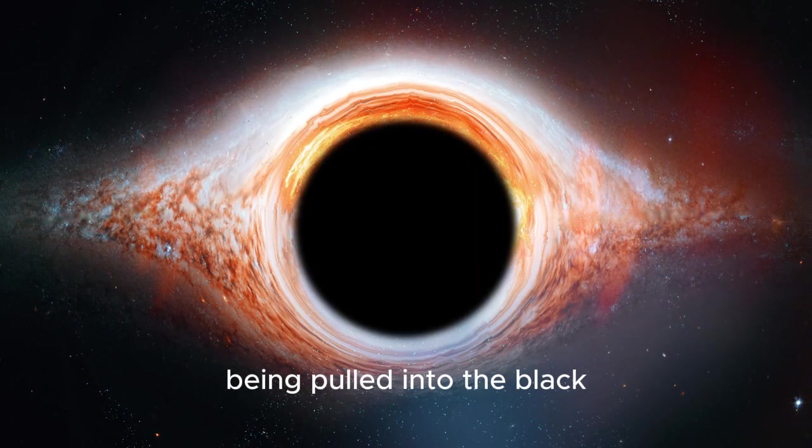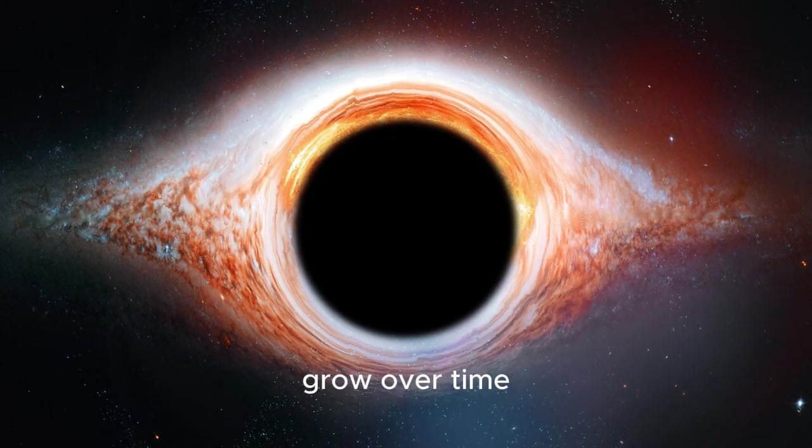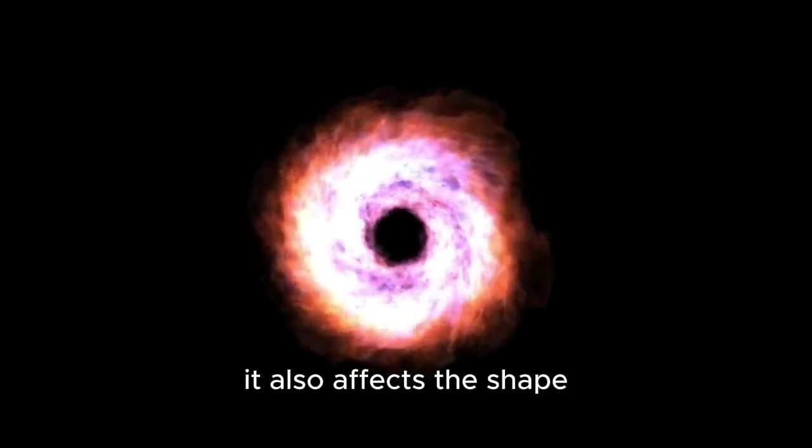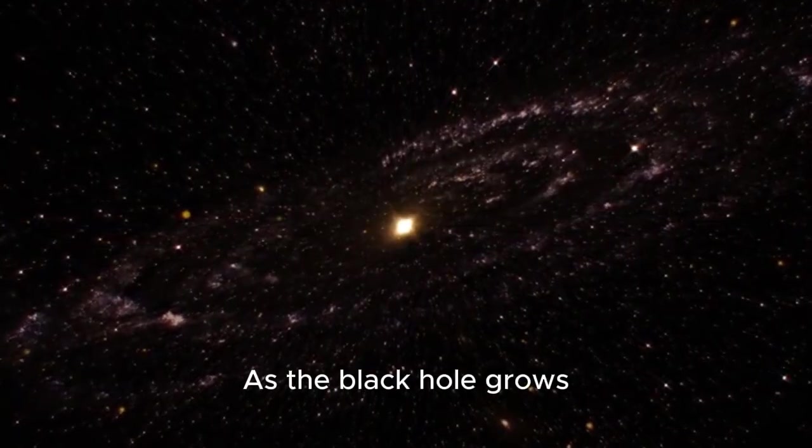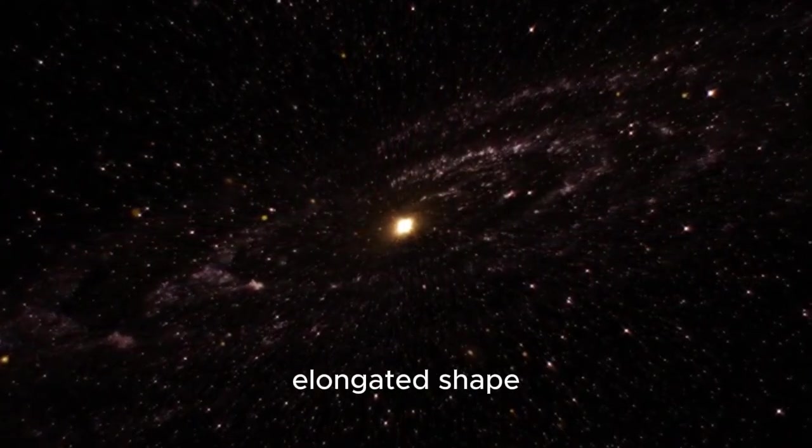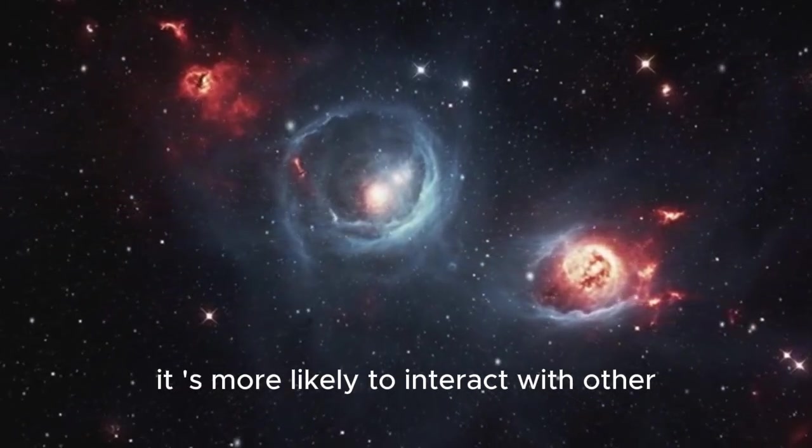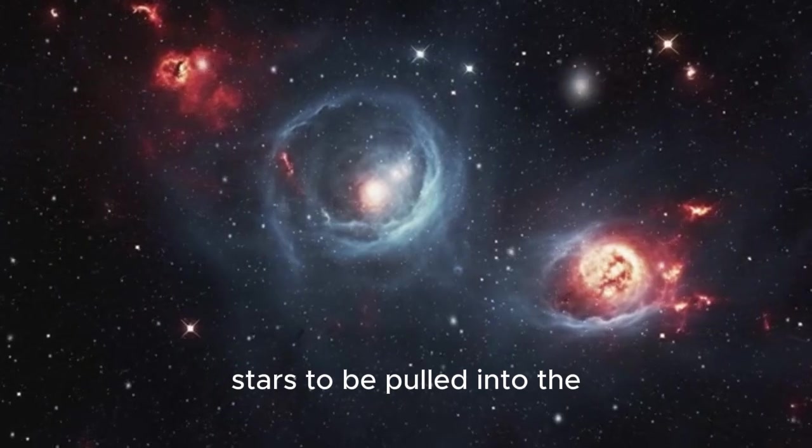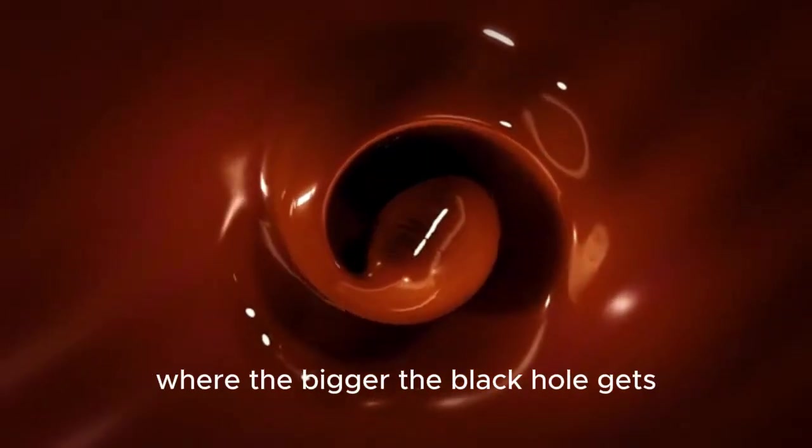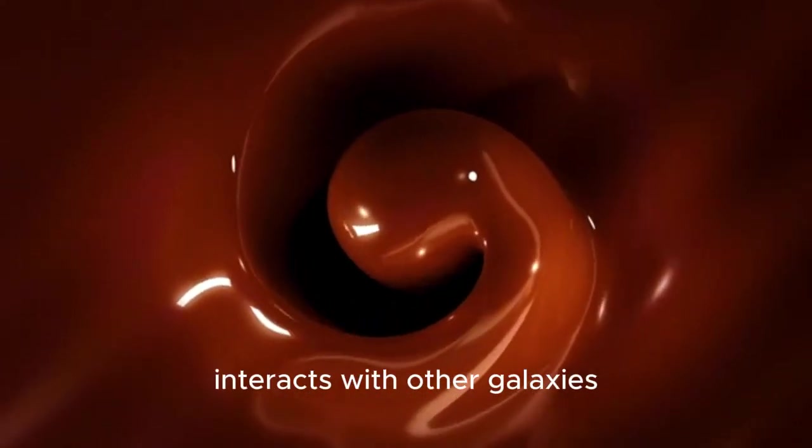This process of stars being pulled into the black hole and adding their mass to it is what causes the black hole to grow over time. But the growth of the black hole doesn't just affect the stars in the galaxy. It also affects the shape of the galaxy itself. As the black hole grows, its gravity becomes stronger and it starts to pull the galaxy into a more elongated shape. And when the galaxy is more elongated, it's more likely to interact with other galaxies and that can cause even more stars to be pulled into the black hole.